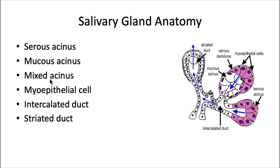We also have a mixed acinus, which contains a combination of both serous and mucous cells. When you combine the two, the mucous cells swell and push the serous cells into a cap at the end of the tube into a half-moon shape. That's how it earned its name — serous demilune, meaning a half moon. So a mixed acinus produces both serous and mucous type secretion.